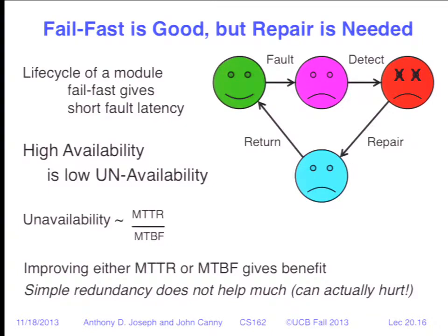Here is the lifecycle of a hardware module: it's running normally, then a fault occurs. You have to detect when the fault occurs, then go through a repair process back to a working state, and return it to active service. You want to get from the fault state back to operational as quickly as possible, because low unavailability gives you high availability. Mean time to repair is critical — either shortening the time to repair or increasing time between faults gives you better availability.